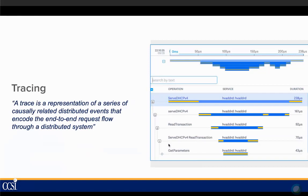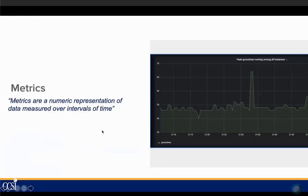Tracing is a little bit newer. A trace is a representation of a series of causally related distributed events that encode the end-to-end request flow through a distributed system. For example, looking at this diagram, we're tracing a DHCP request — serving up the DHCP, doing a read, serving up all the information, and getting all the parameters — timing how long each step took so you can go back and troubleshoot where things might be broken. And then we have metrics, which are a numeric representation of data measured over time: how full is my disk drive, how much CPU am I using. You can use histograms, gauges, or whatever fits your need.